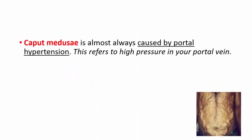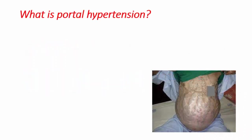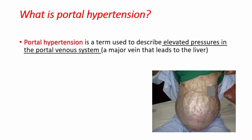It is almost always caused by portal hypertension, which means high pressure in your portal vein. The main symptom of Caput Medusa is a network of large visible veins around the abdomen. You can see this network from the picture shown, and from a distance it might look like a black or blue bruise.